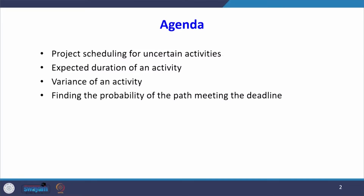The agenda for this lecture is: project scheduling for uncertain activities, then finding expected duration of an activity, then finding the variance of an activity, and finally finding the probability of the path meeting the deadline. These topics we will cover in this lecture.